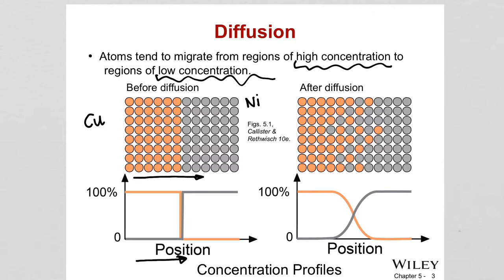The couple is kept at that elevated temperature for a certain period of time. Before heat treatment, looking at concentration versus position: along the copper side it is 100% copper, but when reaching the interface, it drops suddenly to 0% copper, because it's all nickel. Similarly, the nickel concentration is 0% on the copper side and jumps to 100% at the interface.